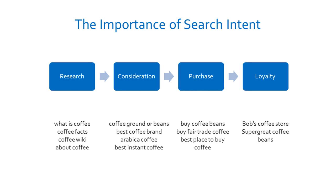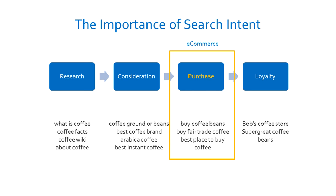Then you reach the purchase stage — this is the stage where the consumer is ready to buy something and they're actively looking to buy. That's where you get keywords like 'buy coffee beans,' 'buy fair trade coffee beans,' 'best place to buy coffee.' That's a user with real purchase intent. And then the final stage is the loyalty stage, where basically the consumer knows where they want to buy something and they're typing in your brand name or your product name to get back to your store to purchase that thing.